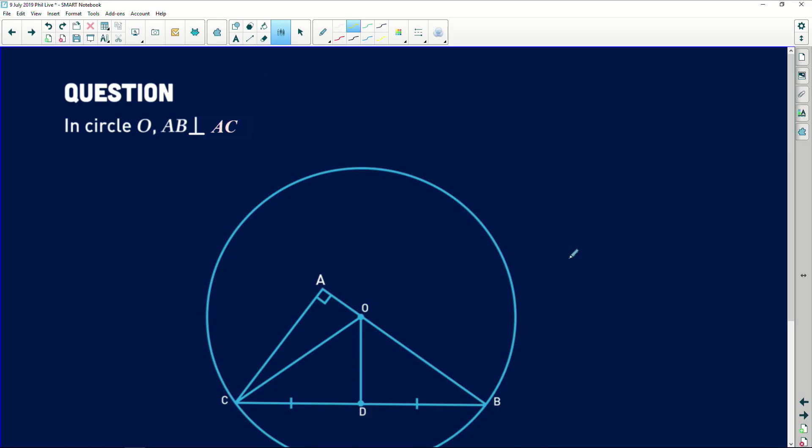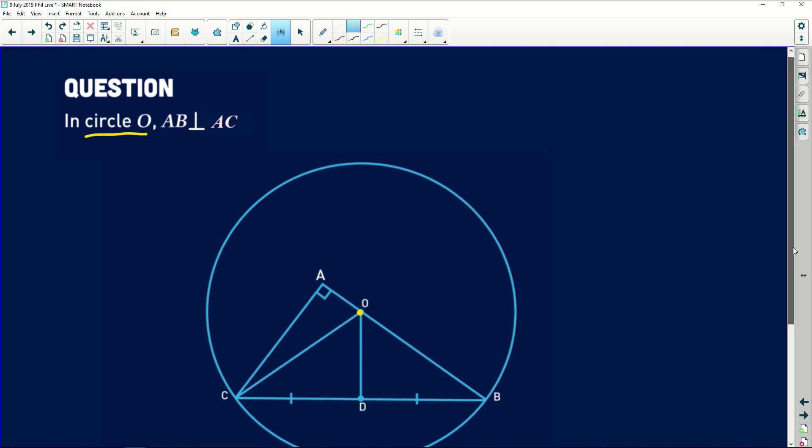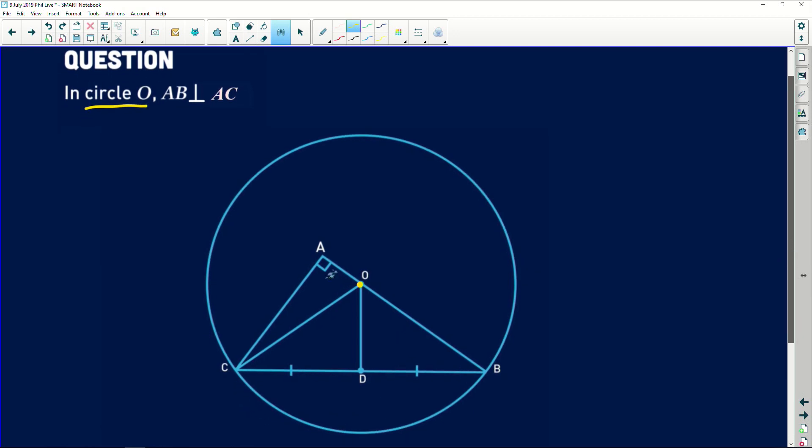It says, in circle O, very important. It means that O is the center of the circle. AB is perpendicular to AC. That's this perpendicular sign over here. So the only information we're given is that these two are perpendicular and also it's indicated on the diagram that these two lengths are equal here.